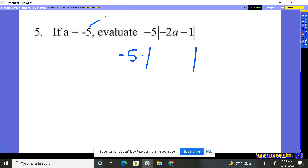What number are we plugging in? We'll plug in negative five into that a. So it's negative two times negative five minus one. Well, we have to evaluate multiplication first. That's 10. So it's absolute value of 10 minus one times the negative five.